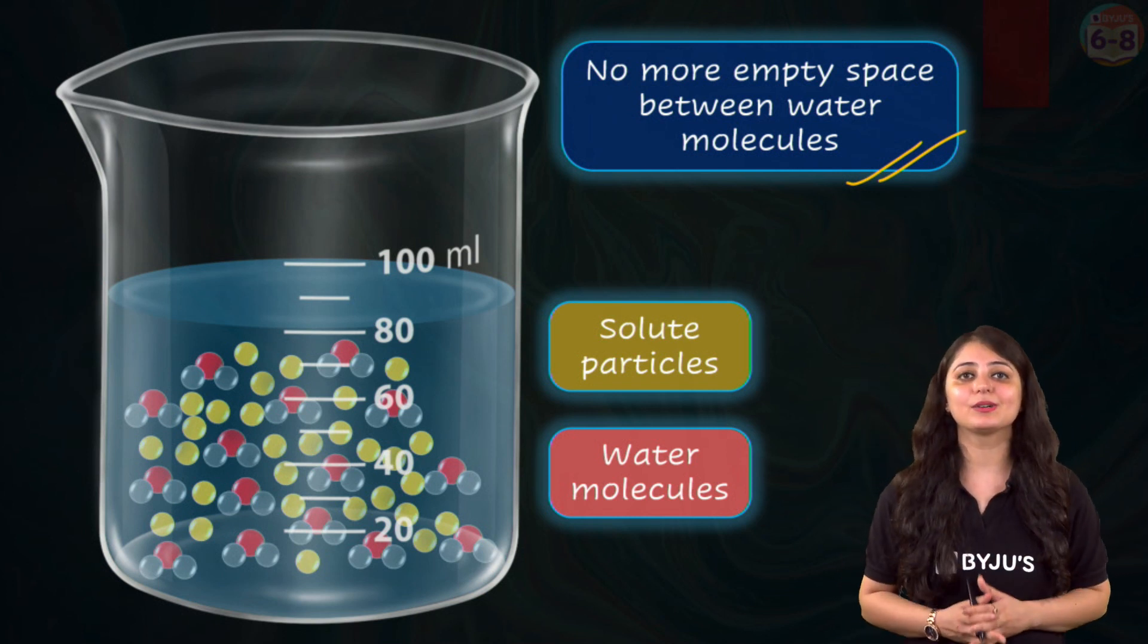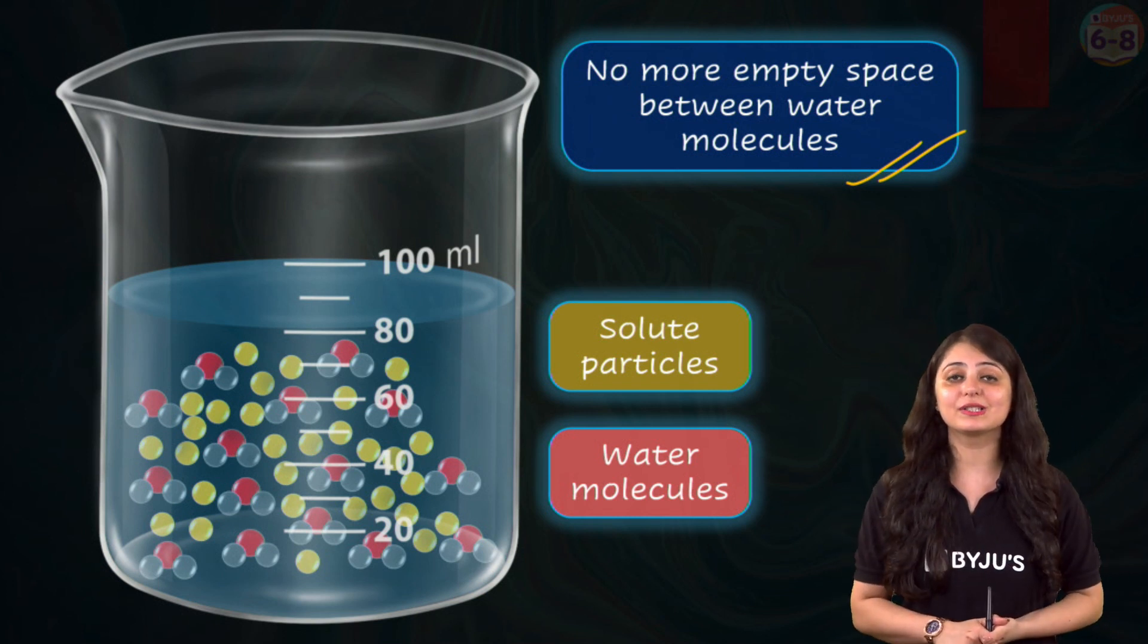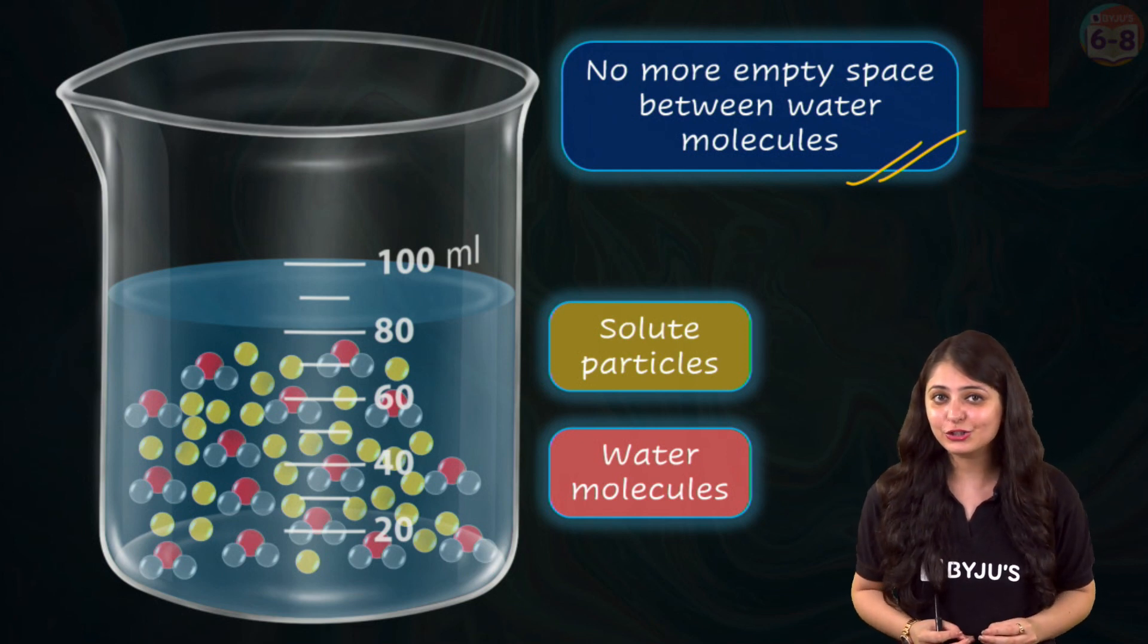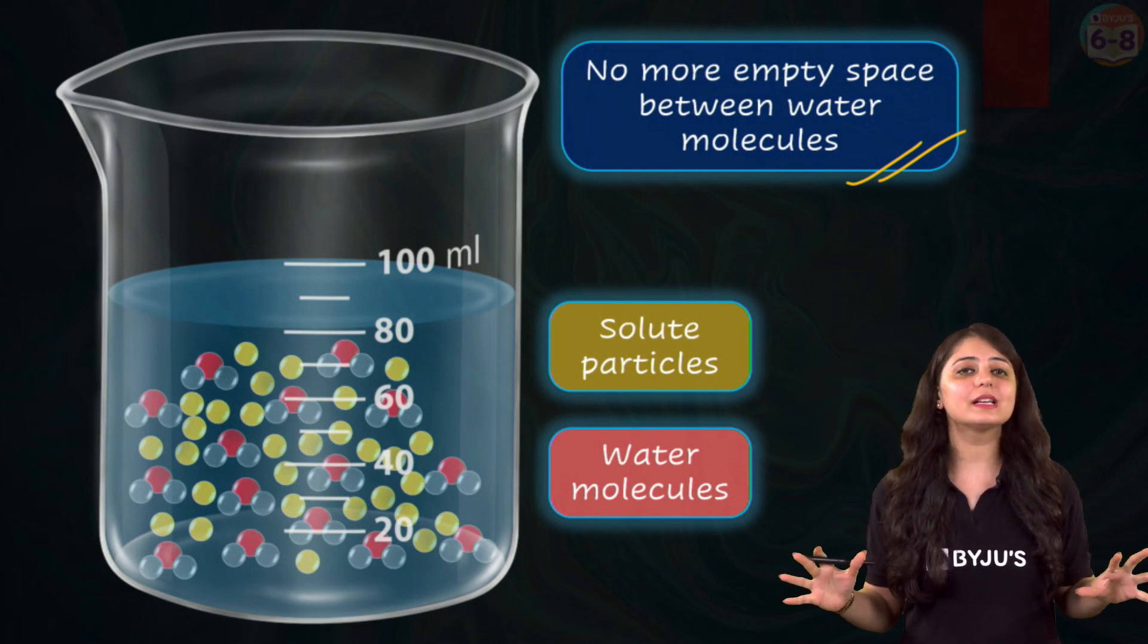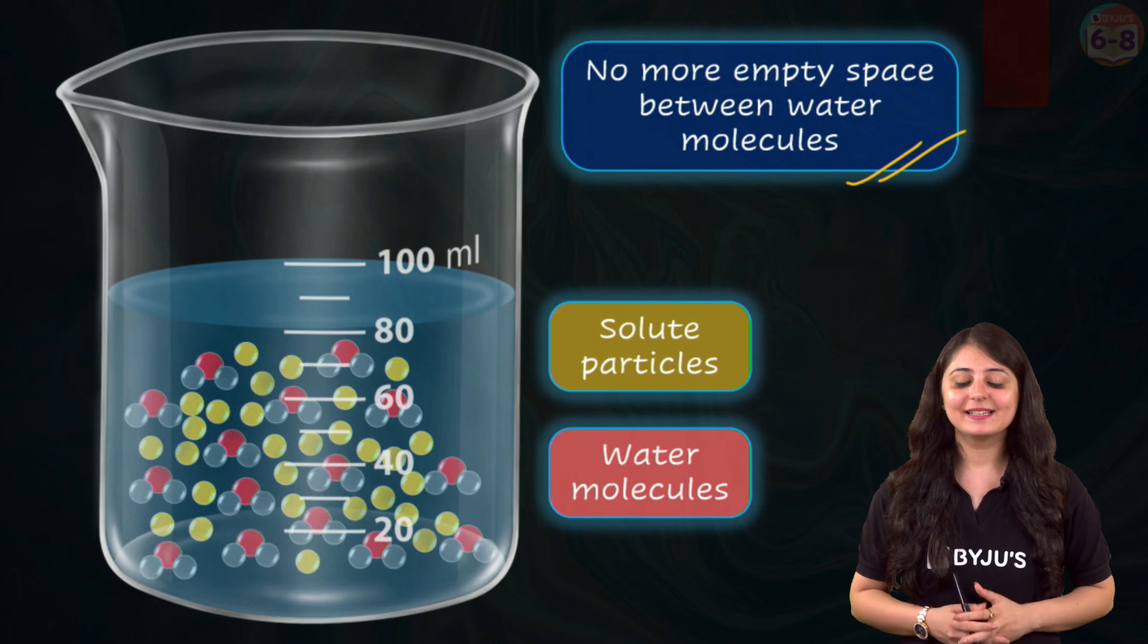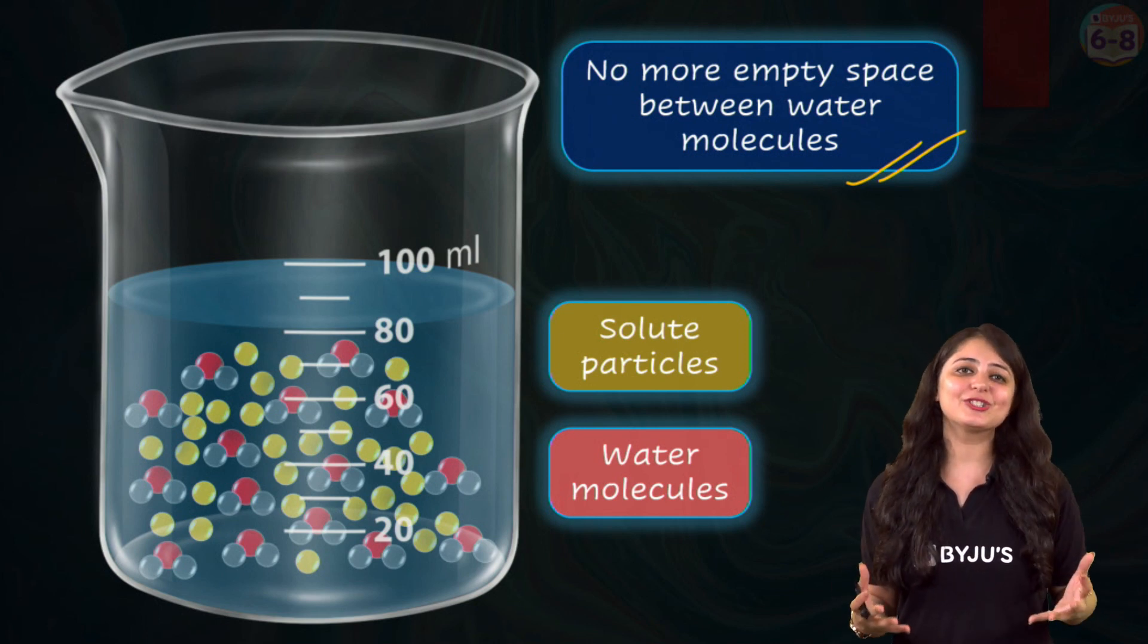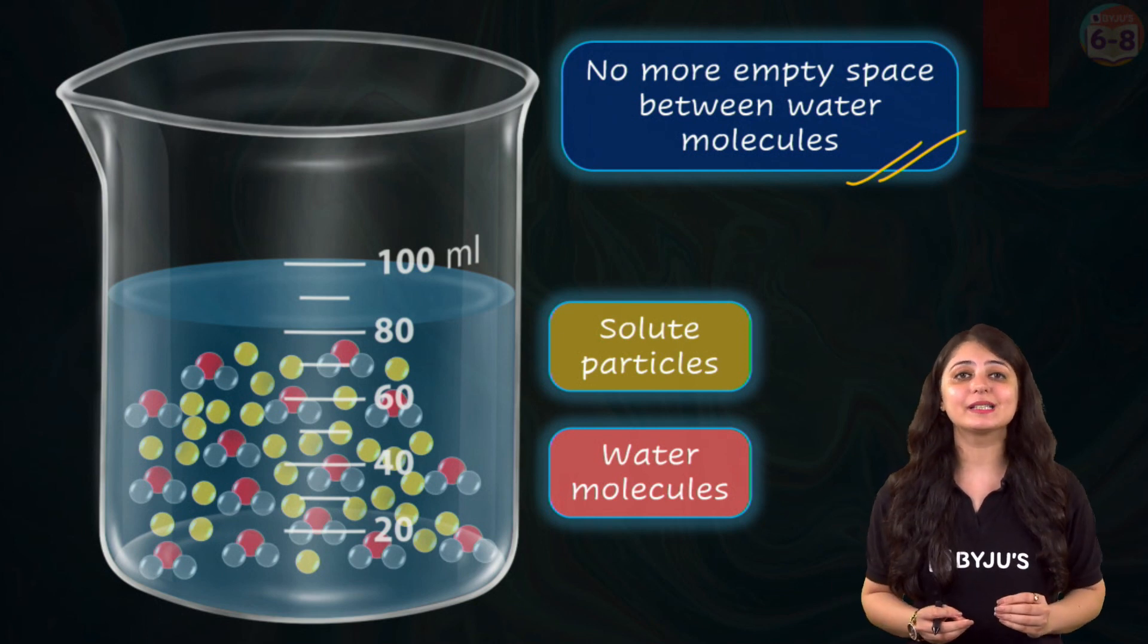Where more solute particles cannot be added. Such a solution is called a saturated solution, and no more solute can be dissolved at this stage. So a saturated solution contains maximum amount of solute that is capable of dissolving.